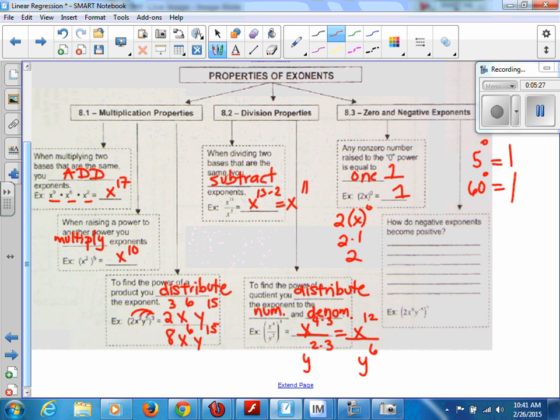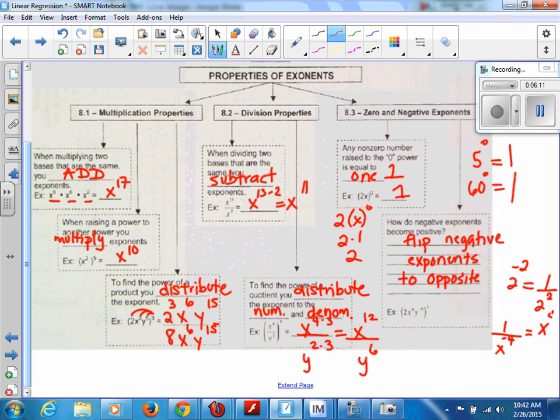How do negative exponents become positive? So I need you to put flip negative exponents to the opposite side. I'm just going to put to opposite. Because really, if it's in the numerator, so if I had like 2 to the negative 2, I would actually write 1 over 2 to the power of 2. But if my negative exponent was in the bottom, and I had x to the power of negative 4, you would have to switch it to the top and have x to the power of 4 over 1.